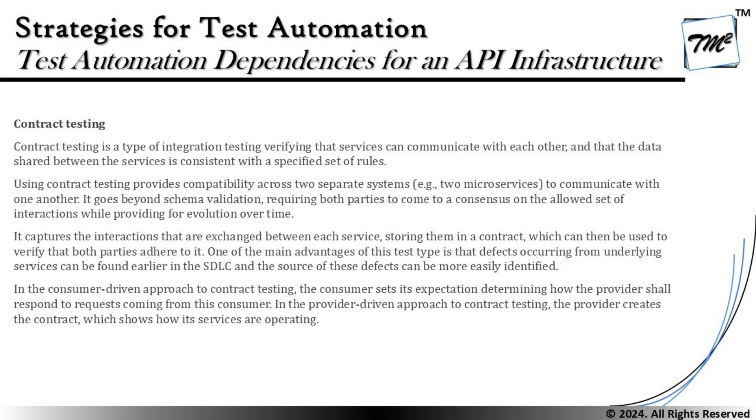For example, if a flight booking system from India is trying to interact with Singapore Airlines, they must have agreed on certain terms and conditions — what kind of data you can request, and based on that information they will respond accordingly. If you don't provide the minimum required information like number of passengers, origin, destination, and flight date, they may not be able to respond back. Contract testing captures the interactions exchanged between each service, storing them in a contract which can then be used to verify that both parties adhere to it.